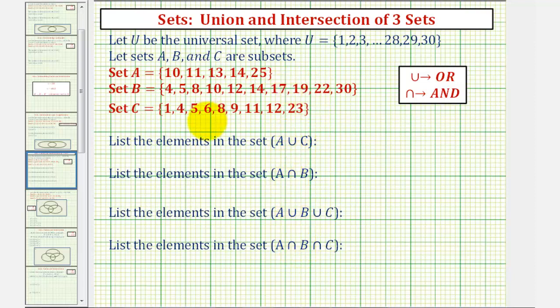We did this problem earlier using a Venn diagram. This time, let's find the elements in each of these sets by analyzing sets A, B, and C.